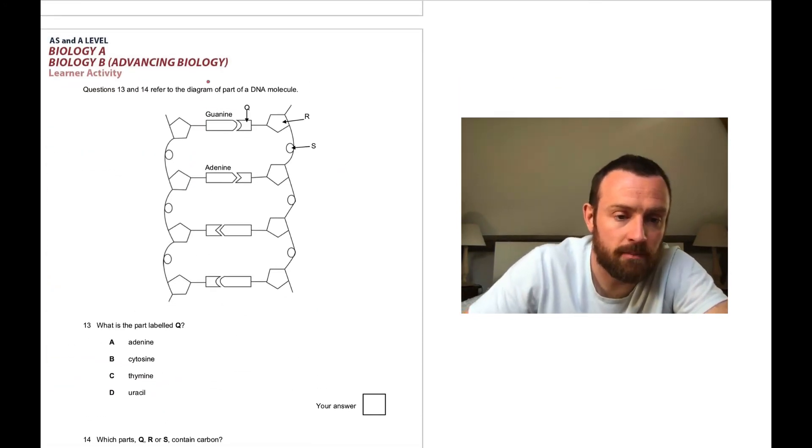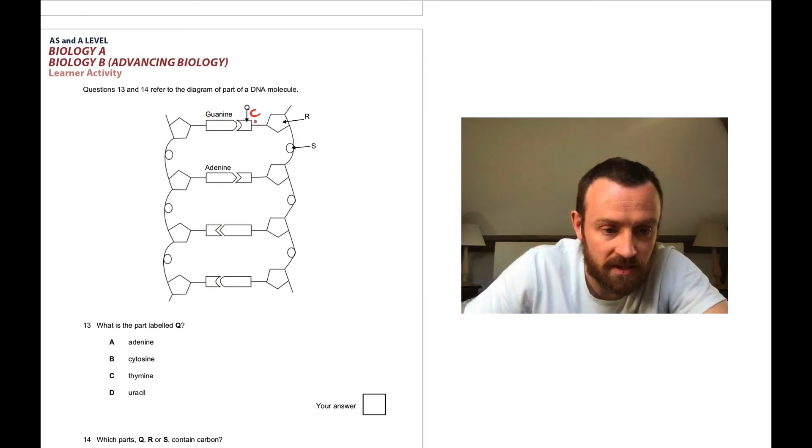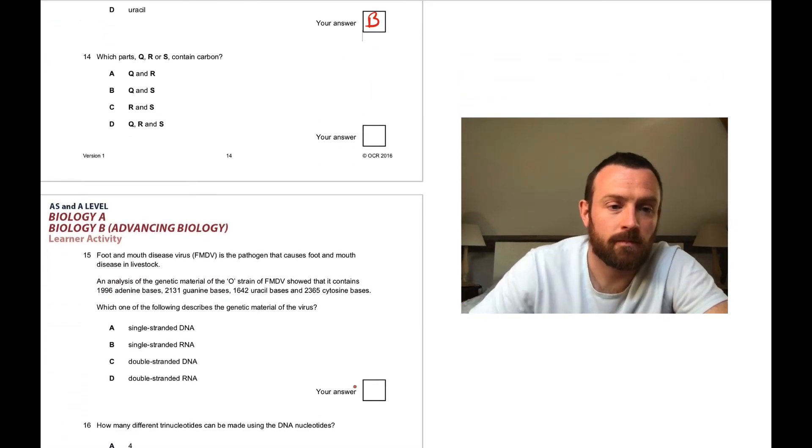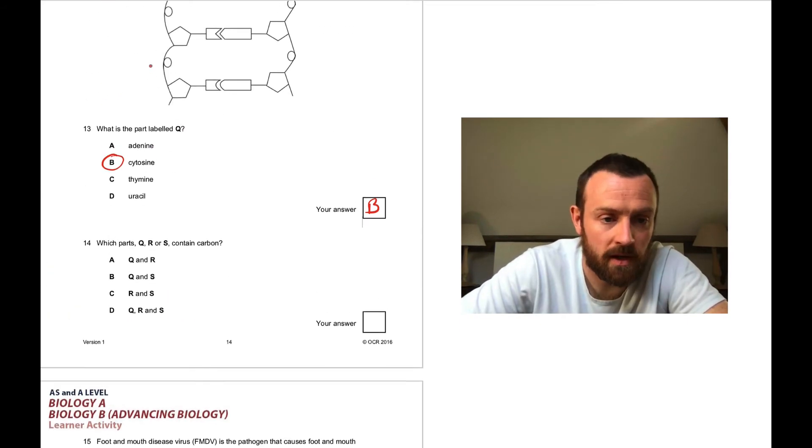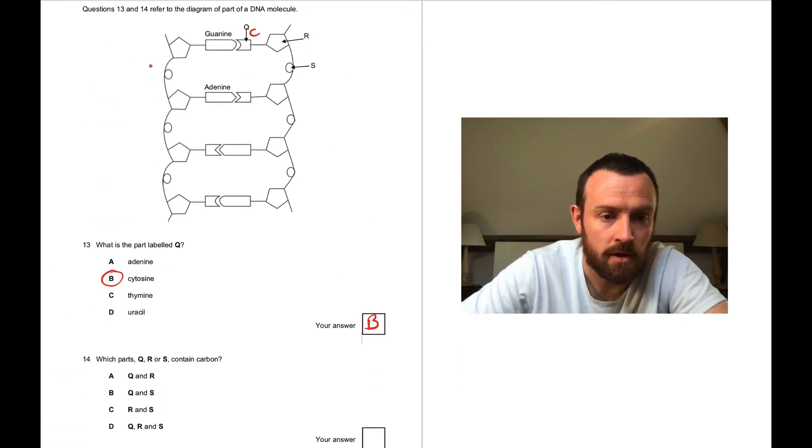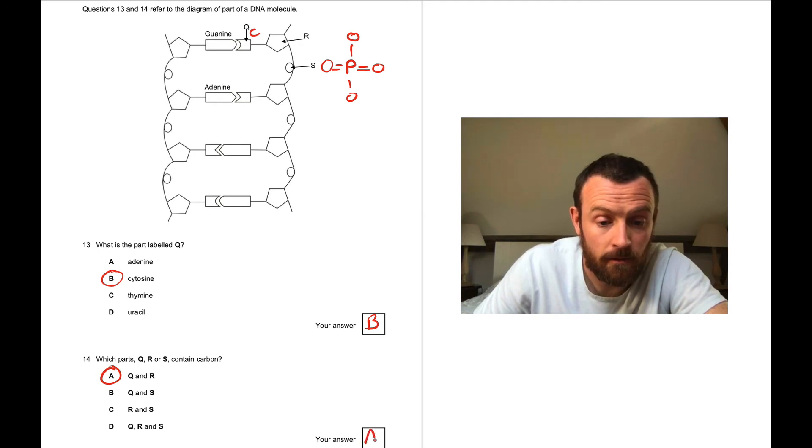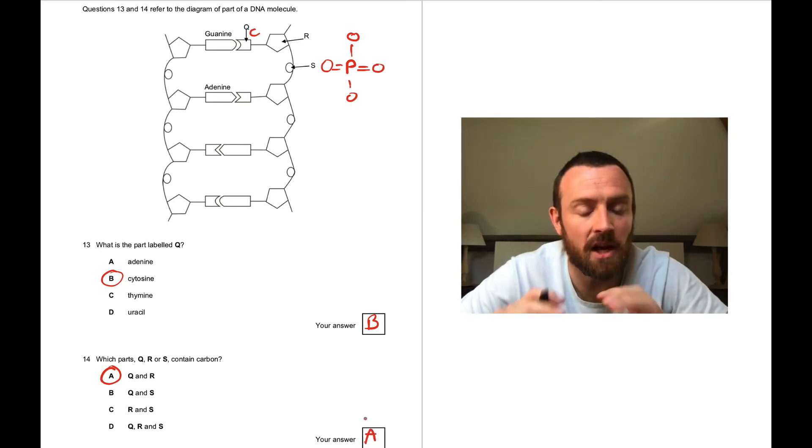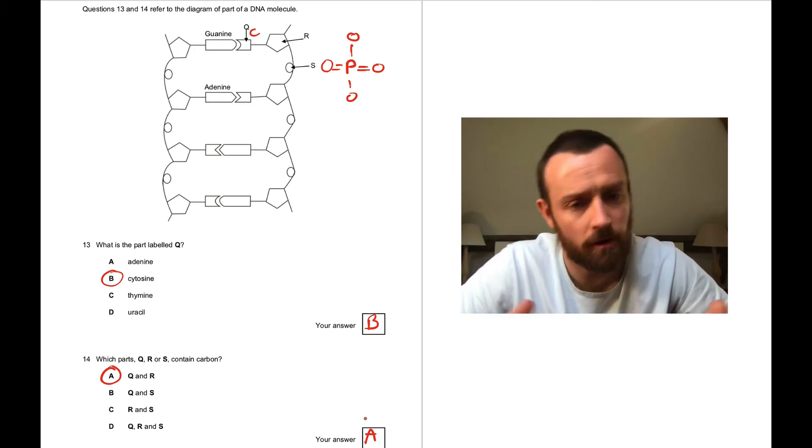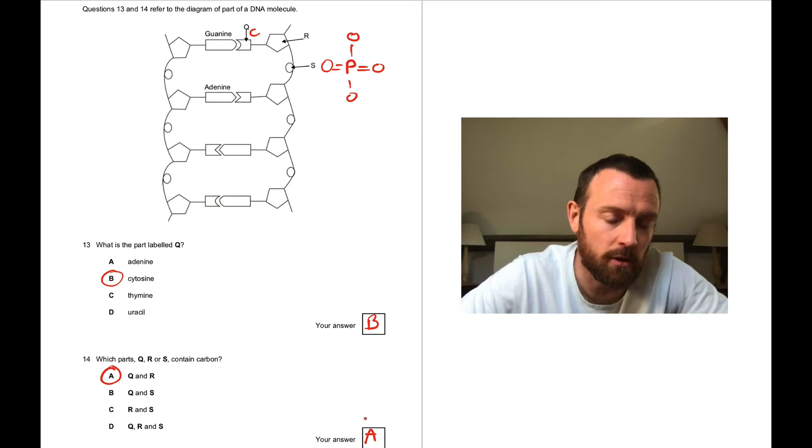Question 13: Q is a base, what is it? If that's guanine, that's got to be cytosine. Question 14: which parts contain carbon? At first glance you might think it all contains carbon, but actually S doesn't - S is the phosphate, which looks like this. It contains phosphorus and oxygen but no carbon. The answer is Q and R, which is A. You may have been confused - the base does contain nitrogen but it's made of carbon, nitrogen, oxygen and hydrogen.